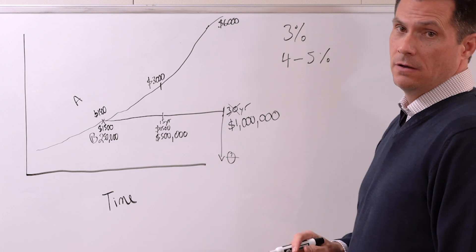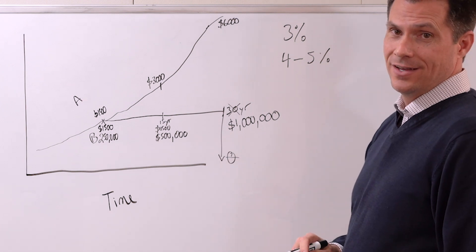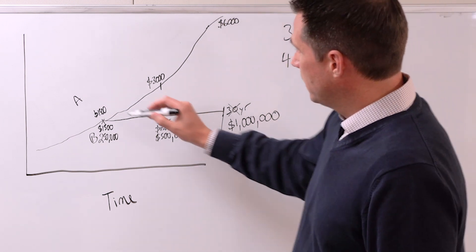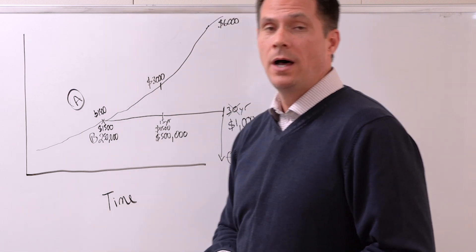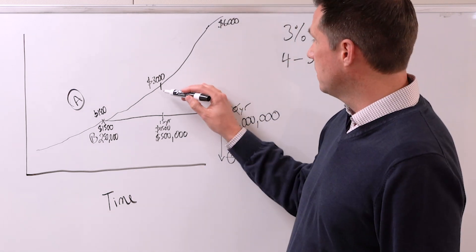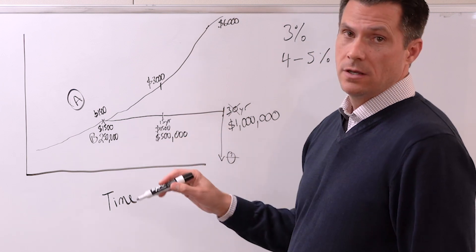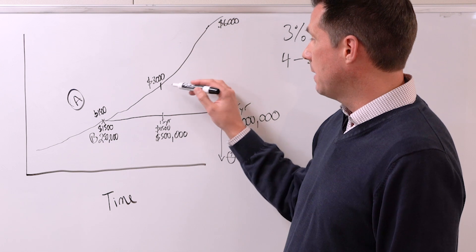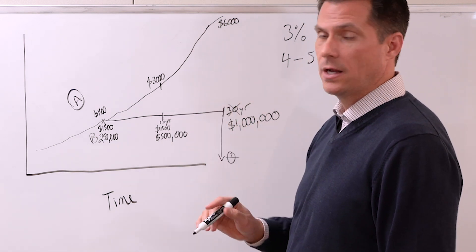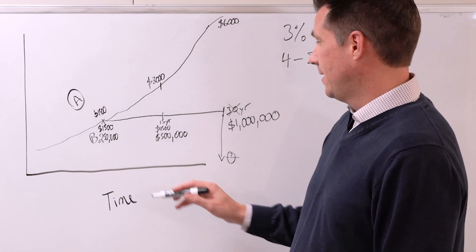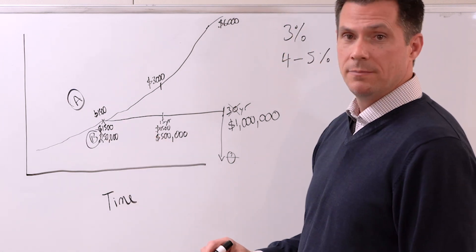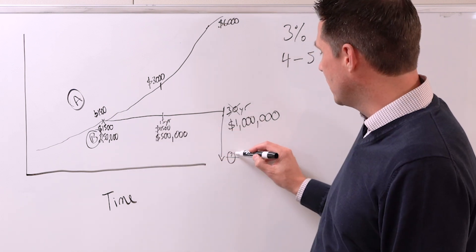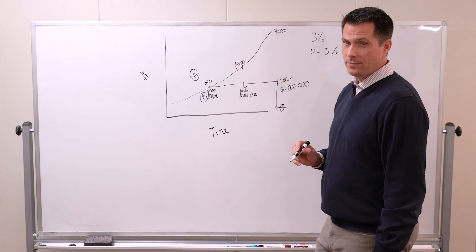That means our area over time is now getting more and more expensive. So if Renter A never bought, chances are somewhere between this 15 to 30 years, if he's still working or especially if he retired, that person wouldn't be able to live in this area anymore—they'd have to move somewhere else much cheaper. But our Buyer B, because they locked it in, doesn't have to move. They're locked in. In over 30 years, they own the place.